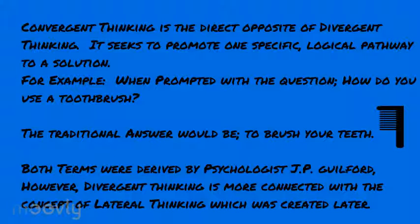For example, one plus one is two — very traditional. You can't argue otherwise, and there's no other way to promote thought to that answer. That's what convergent thinking does specifically within our educational system. It seeks to promote one method of doing things that produces one specific answer, where in a multiple choice format, everyone should come to the same solution.